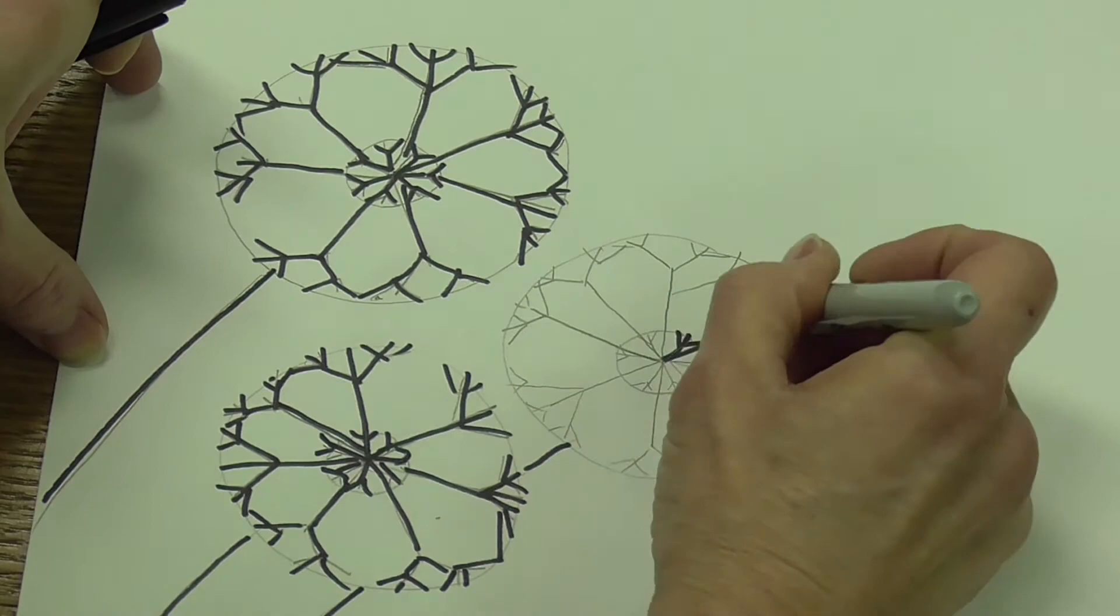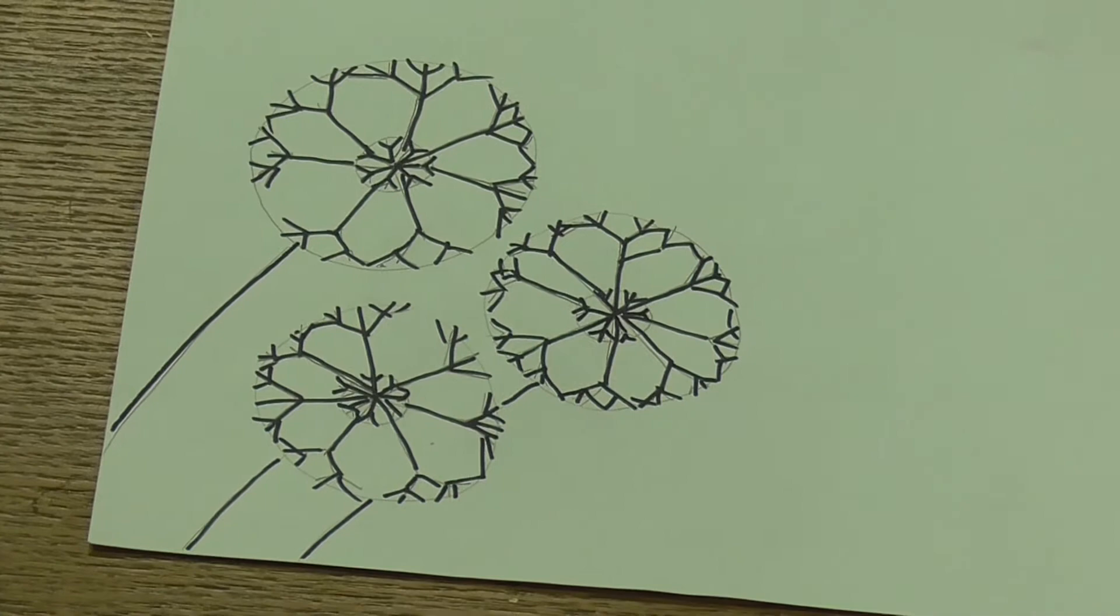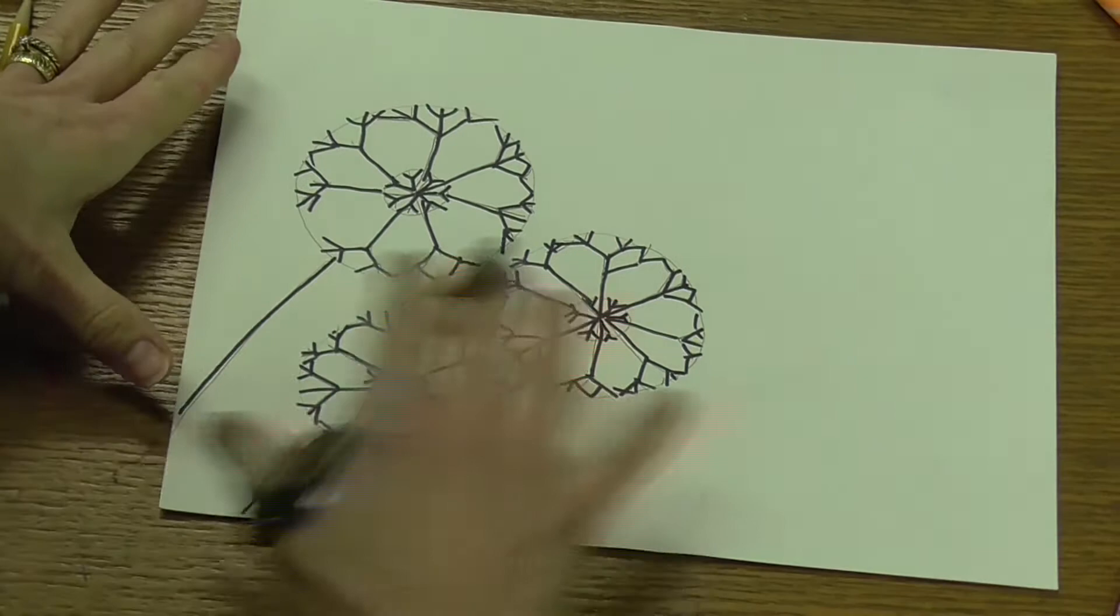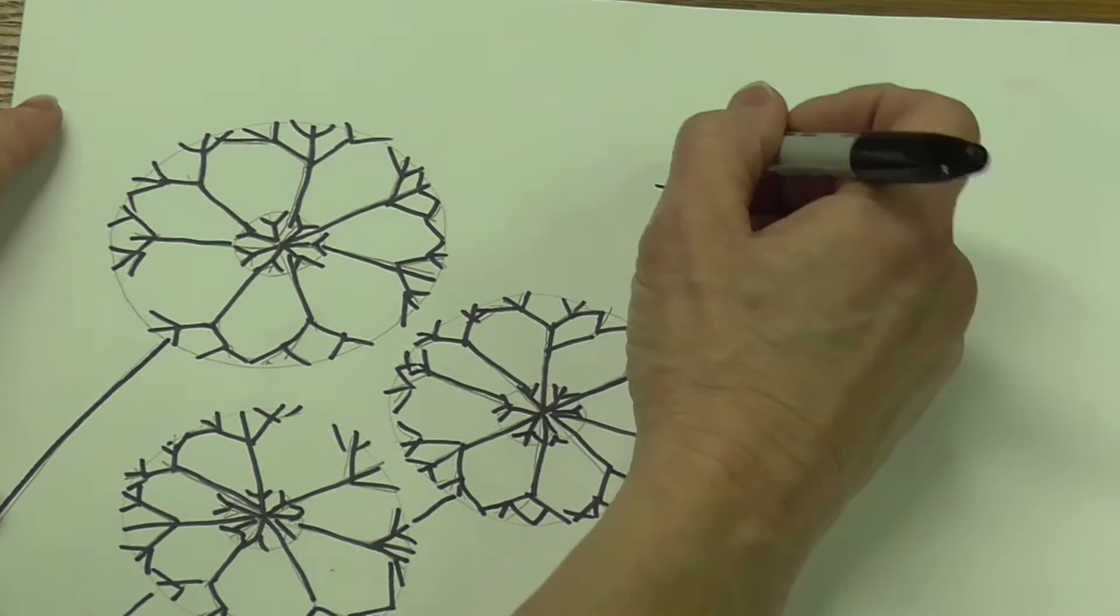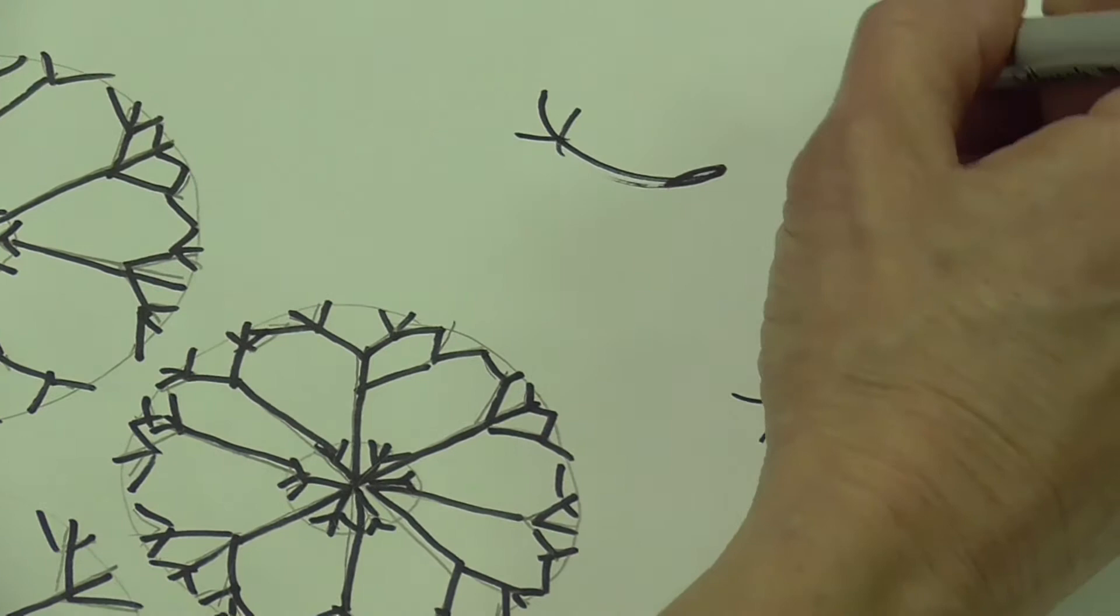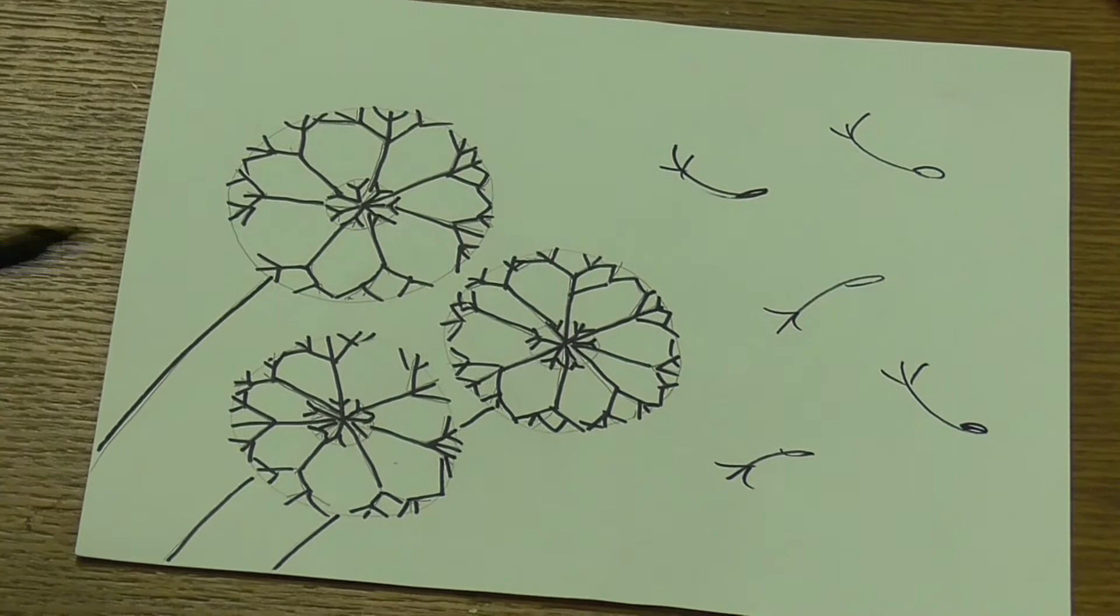When dandelions are at this stage and you blow them, it pushes those seedlings out. I'm going to draw some seedlings with a little loop here, going in whichever direction the wind takes them. You can add as many as you want, blowing in different directions. Now it's important that we erase our pencil marks.